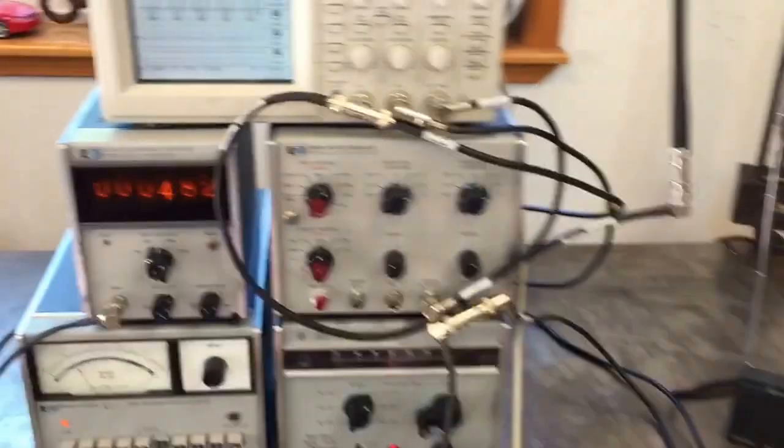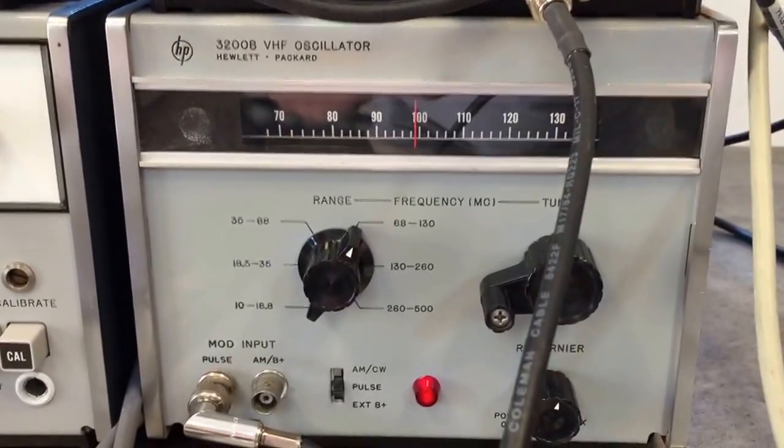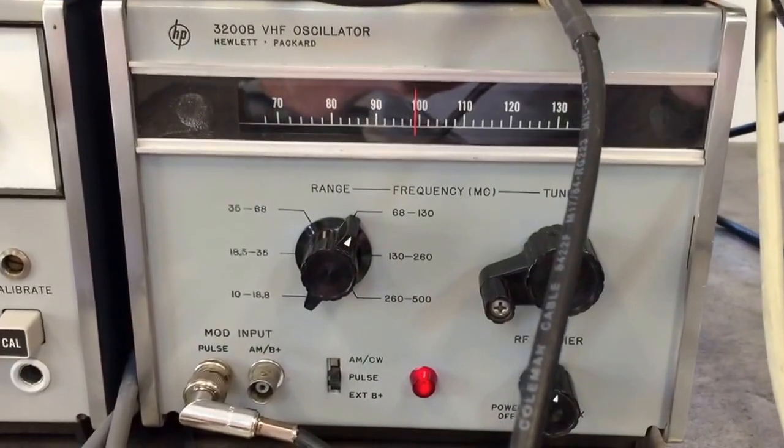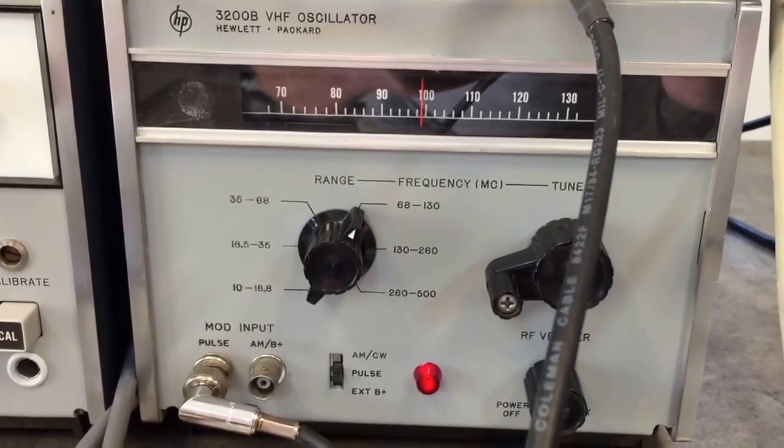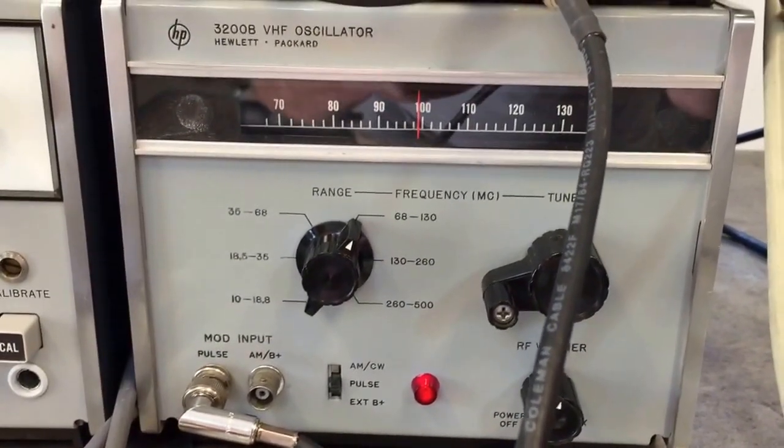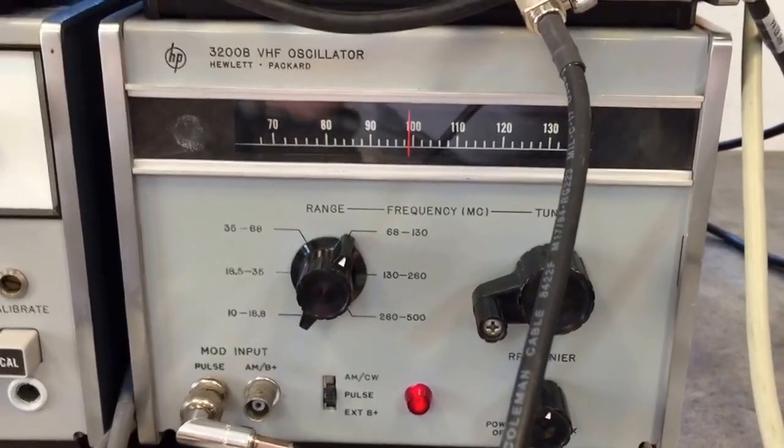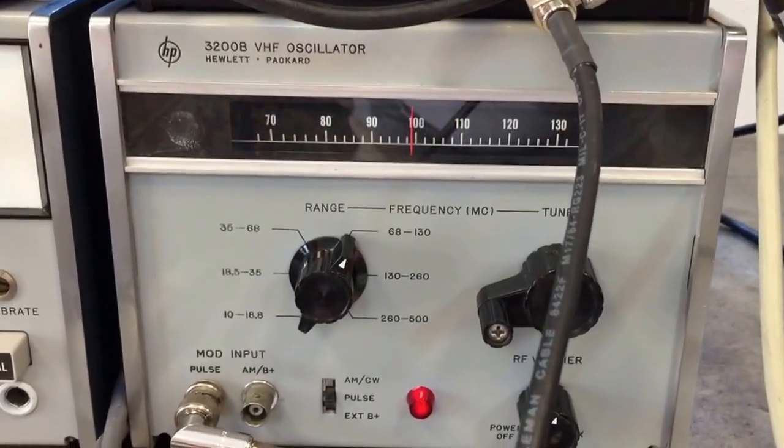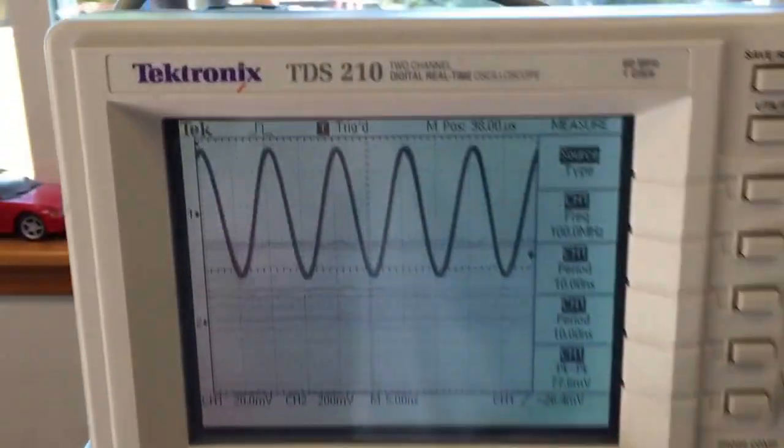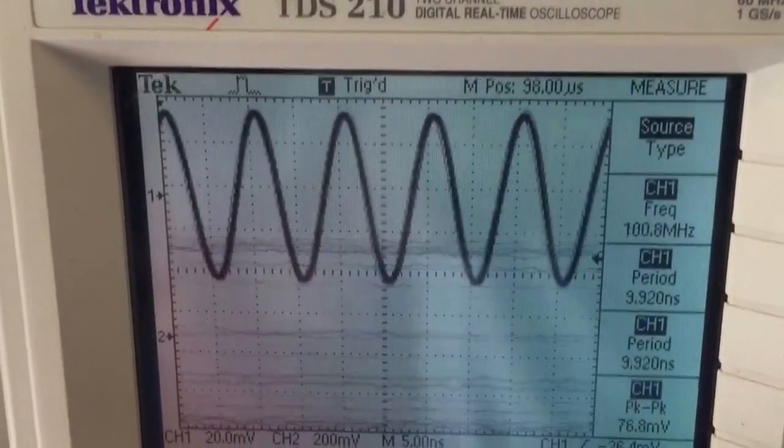This is a 3200B VHF oscillator. It goes from 10 megahertz to 500, so half a gigahertz. Right now I've got it tuned right about 100, and there it is - about as fast as my scope goes, reading right about 100 megahertz.